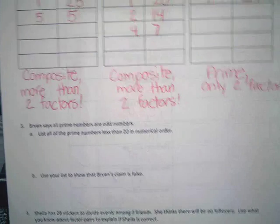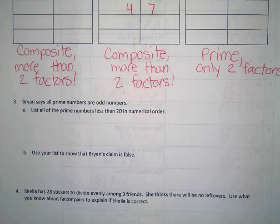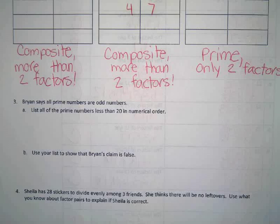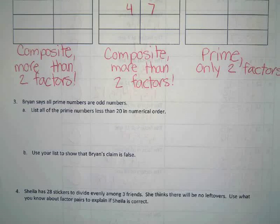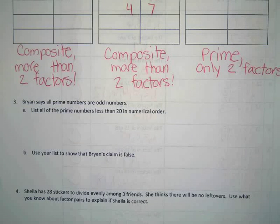Let's look at number three: Brian says all prime numbers are odd numbers. List all prime numbers less than 20 in numerical order. We don't include 1. So let's look at 2 — is that prime? Wait, it is prime. Because the only factors are 1 and 2, so it is prime. 2 is prime.